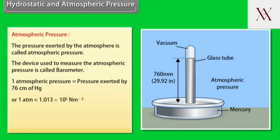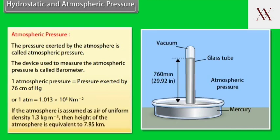Or, one atmosphere is equal to 1.013 times 10 to the power 5 Nm per square. If the atmosphere is assumed as air of uniform density 1.3 kg per meter cube, then height of the atmosphere is equivalent to 7.95 km.